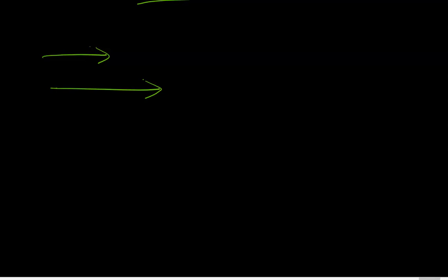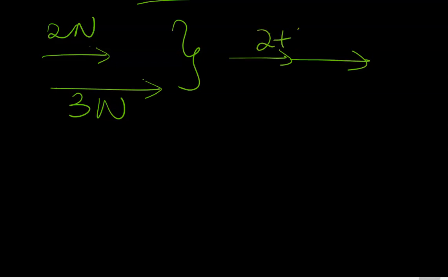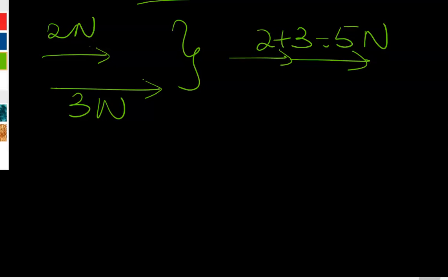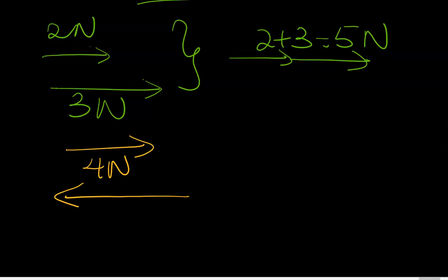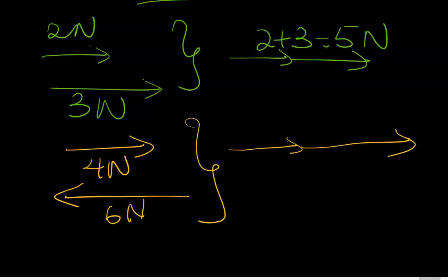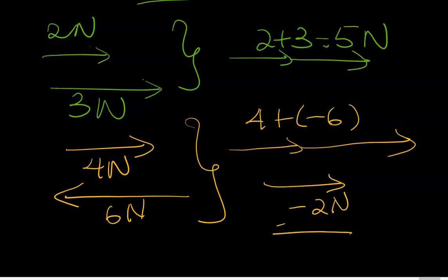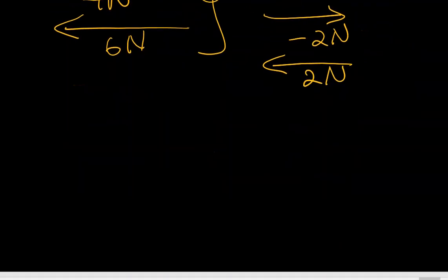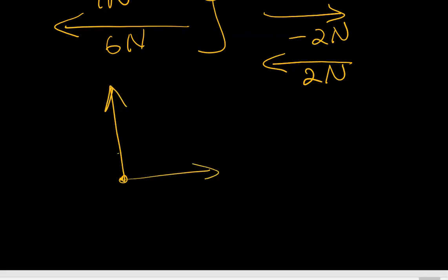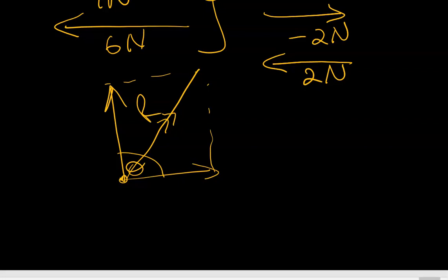If I had parallel vectors — say two and three — using the tip-to-tail rule I could attach both vectors; the direction will be the same and the magnitude will be the sum. Similarly, with a four-newton vector and a six-newton vector in the opposite direction, these are anti-parallel. Combining them gives minus two, which is two newtons in the other direction. For vectors at an angle, you complete a parallelogram where the resultant is the diagonal.